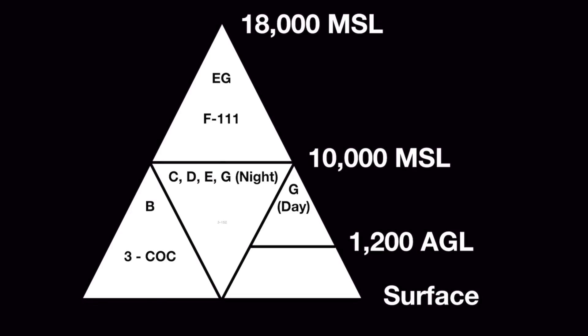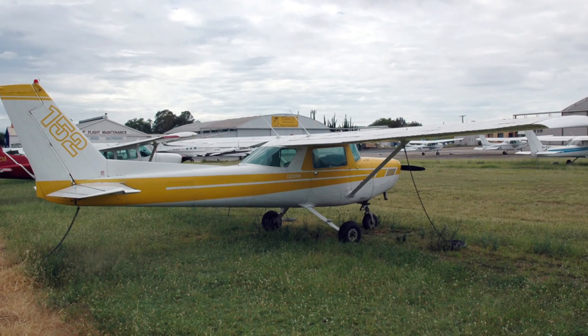In the middle triangle, we'll put 3-152, or 3 Cessna 152s. This reminds us that we need to be on the lookout for general aviation aircraft like Cessna 152s. The minimums are 3 statute miles visibility, 1,000 feet above, 500 feet below, and 2,000 feet laterally from the clouds.